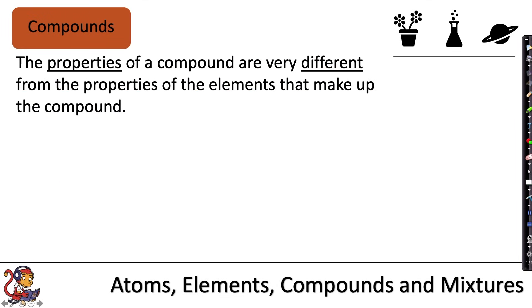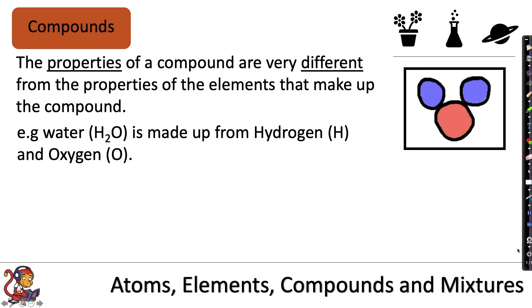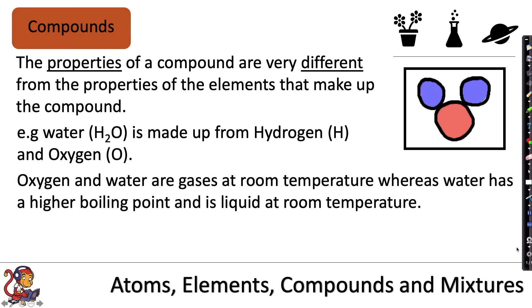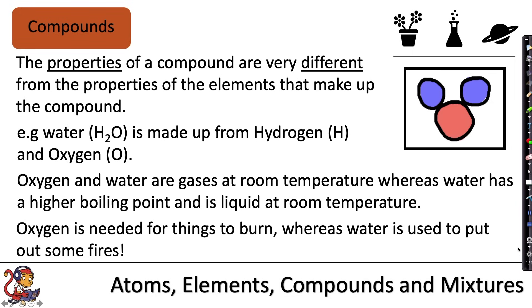The properties of a compound are very different from the properties of the elements that make up the compound. Water is made up from hydrogen and oxygen. Hydrogen and oxygen are gases at room temperature, whereas water has a higher boiling point and is a liquid at room temperature. Oxygen is needed for things to burn, whereas water is used to put out some fires. So this is an example where the properties of the compound, in this case water, are actually very different from the elements that make up the compound.